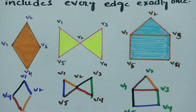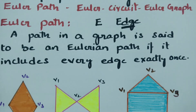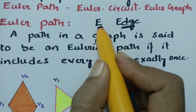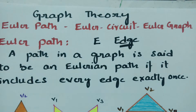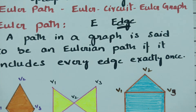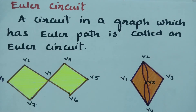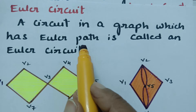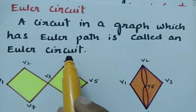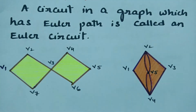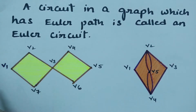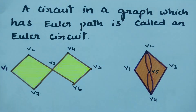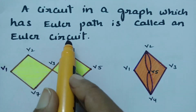So we have to think about edges when it comes to Eulerian path — E for Euler, E for edge. Whereas in a Hamiltonian graph we cover vertices, here we cover each and every edge. Now coming to Eulerian circuit — a circuit in a graph which has a Euler path, if the Euler path exists and we return to the starting vertex, is known as an Euler circuit.